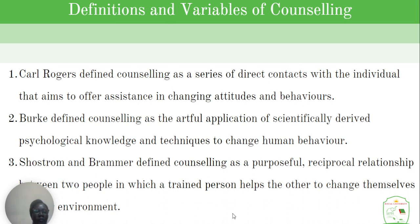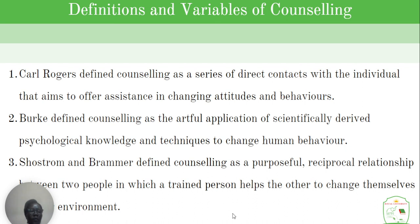Four variables determine the amount of growth and change that take place in any type of counseling. These four variables are: one, the counselor; second, the client; setting; and theoretical orientation. Theoretical orientation is an essential part of effective counseling practice. There are theories that help counselors to organize clinical data, make complex processes coherent, and also provide conceptual guidance for interventions.